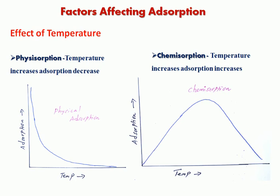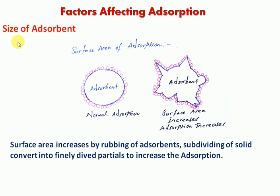Next: size of adsorbent. As the size of the adsorbent decreases, adsorption increases because surface area increases. Surface area increases by rubbing the adsorbent — subdividing solid particles into finely divided particles increases adsorption. When the solid is converted to fine particles rather than a solid lump, the surface area increases between particles, so surface area increases and adsorption also increases. Rubbing adsorbents converts them into fine particles, increasing the number of binding sites and absorption.